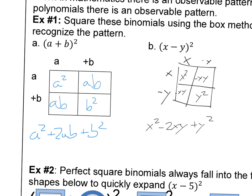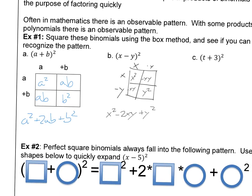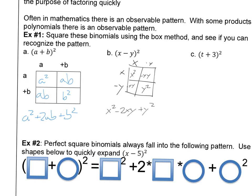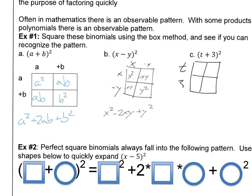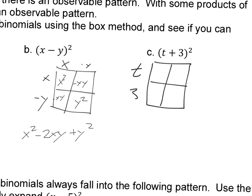I'm starting to see a pattern — hopefully you are too. Let's do one more. This one's going to be t plus 3 times t plus 3. Using the box: t squared, 3t, 3t, and then 3 squared which is 9. So that means we get t squared plus 6t plus 9.